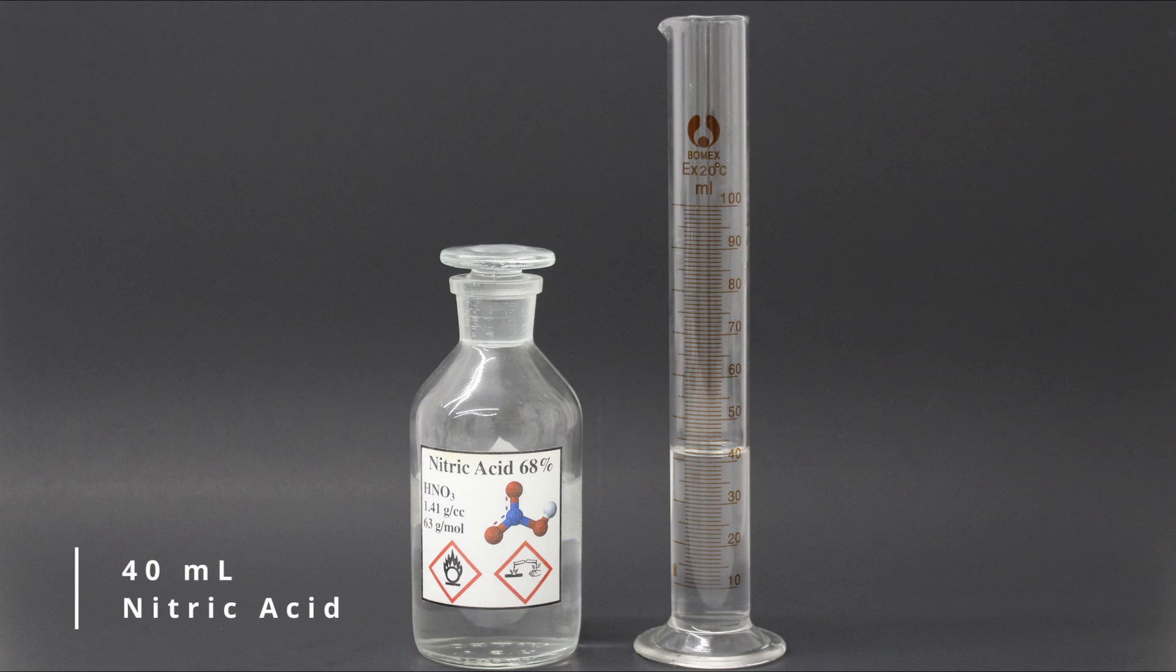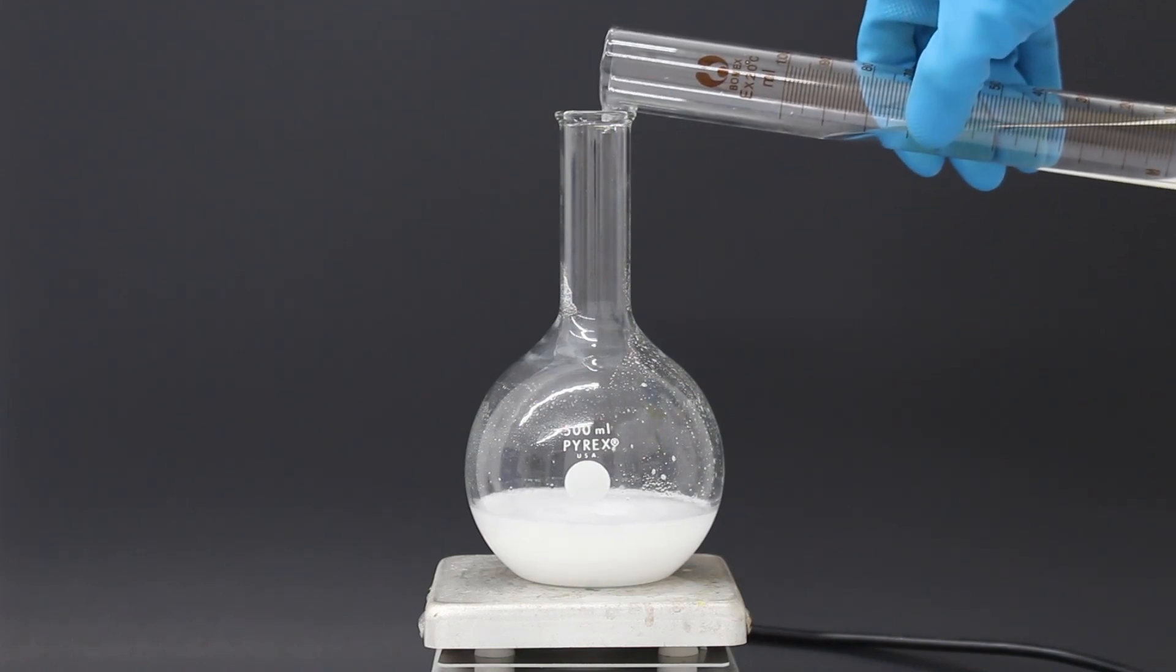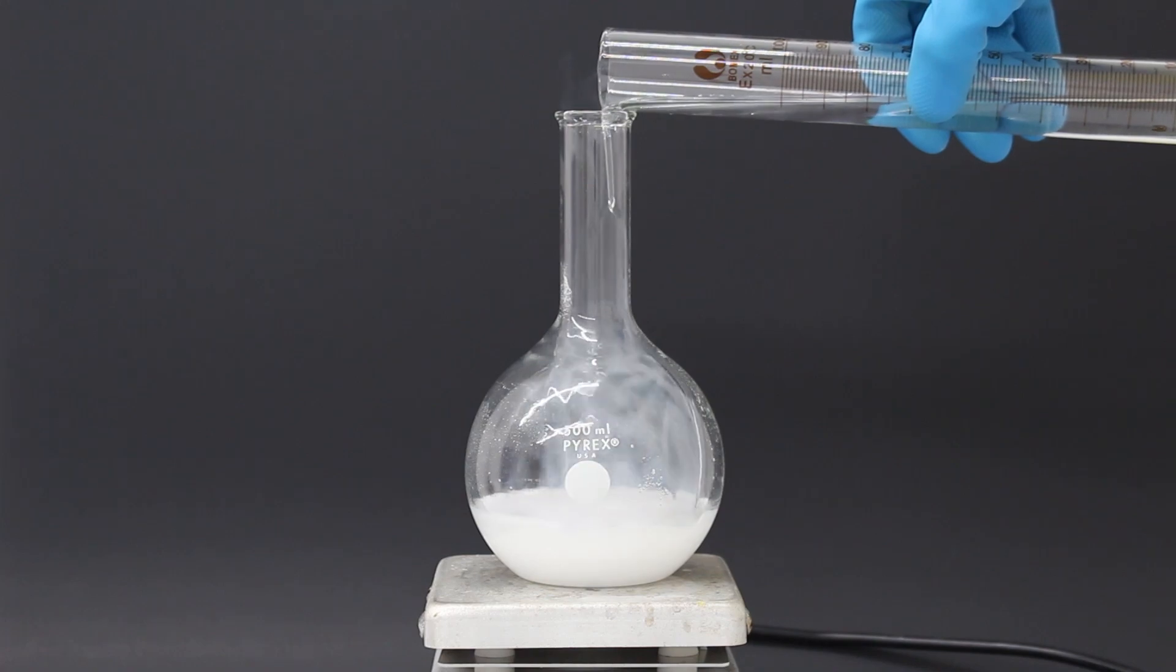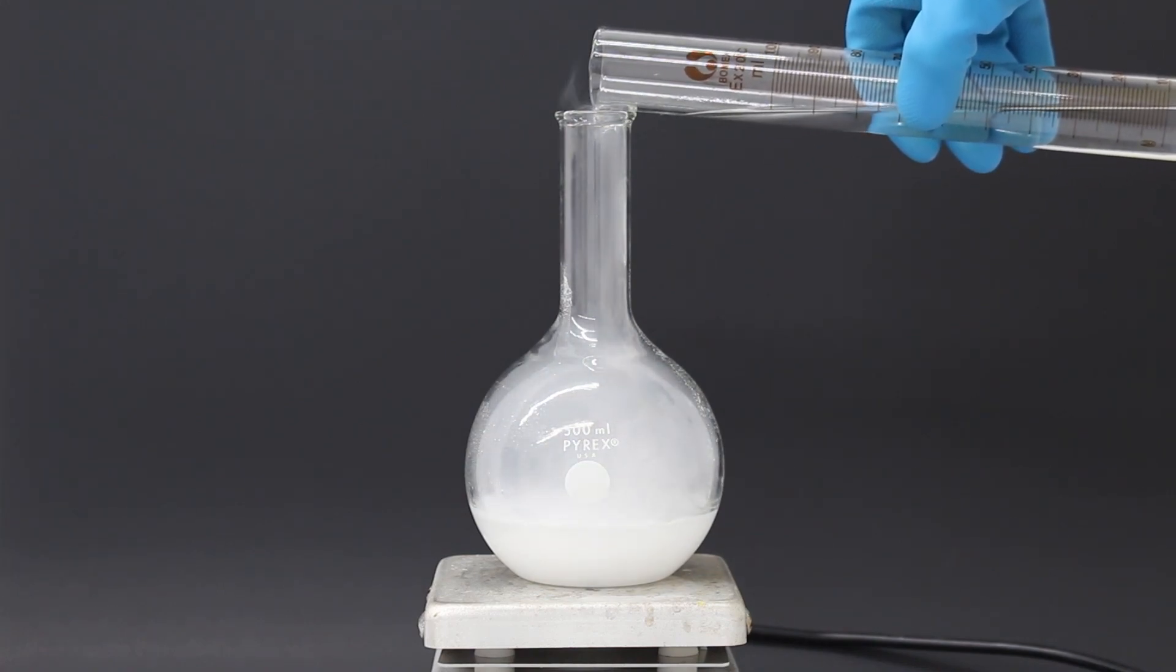Next, we're going to measure out 40 milliliters of 68% nitric acid. This is actually the nitric acid that I made in the previous video. And add it to the ammonium perchlorate. We can already see some perchloric acid fumes being generated here.